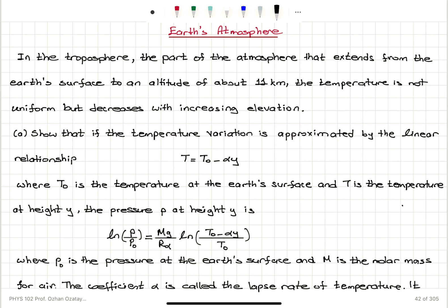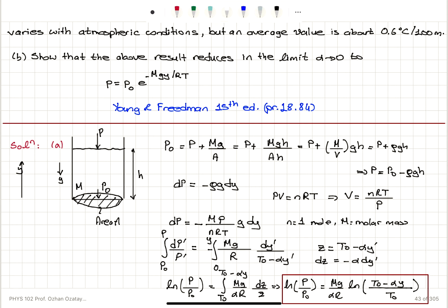Let's summarize. In the troposphere — the part of the atmosphere from the Earth's surface to about 11 kilometers — temperature decreases with elevation as T₀ − αy. T₀ is the surface temperature, T is at height y. The pressure at height y is related by ln(P/P₀) = (Mg)/(Rα) · ln((T₀ − αy)/T₀), where P₀ is surface pressure, M is molar mass, and α is the lapse rate.